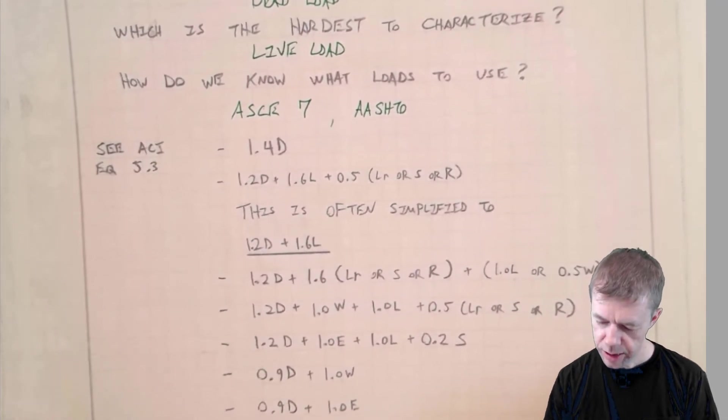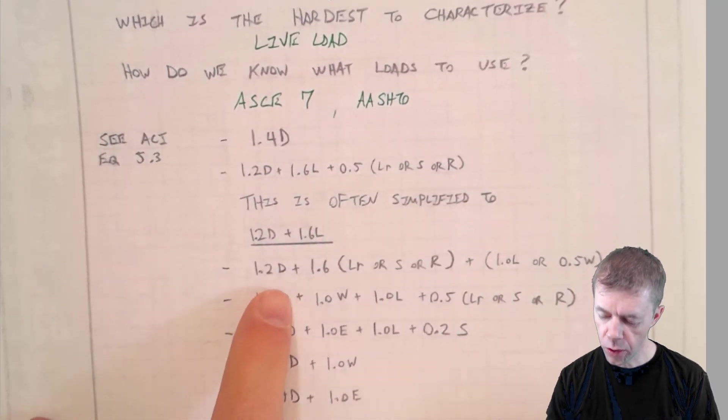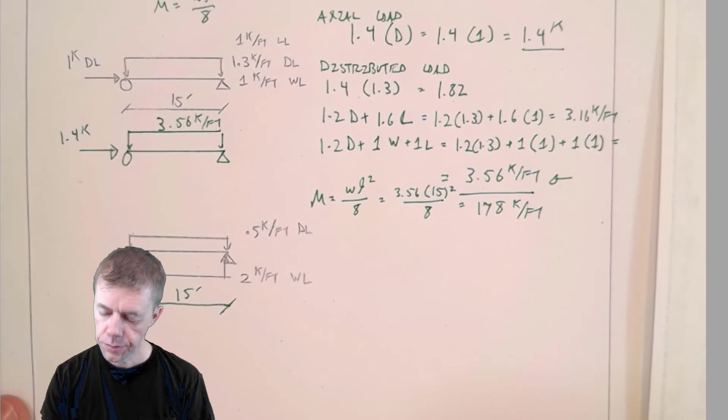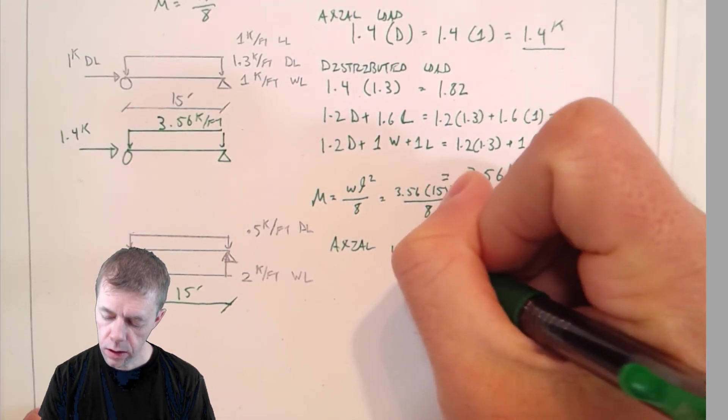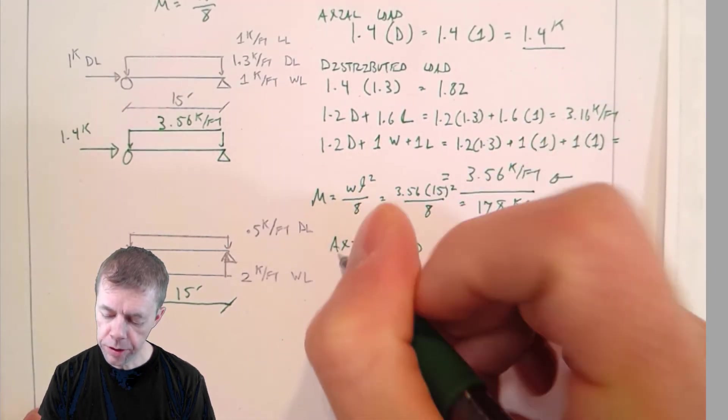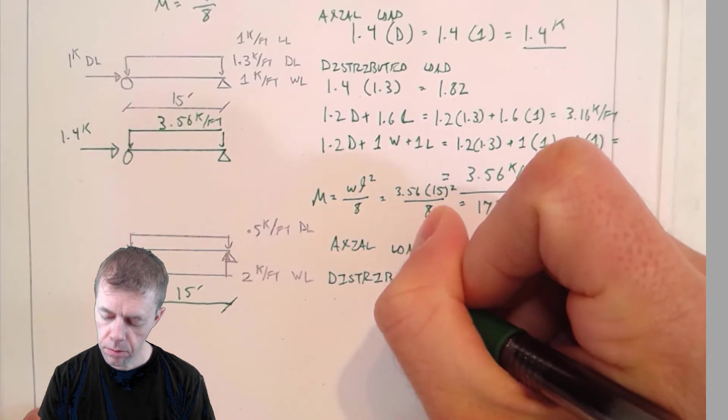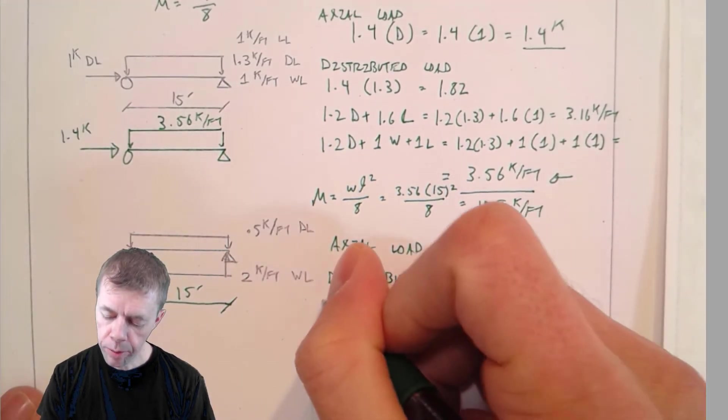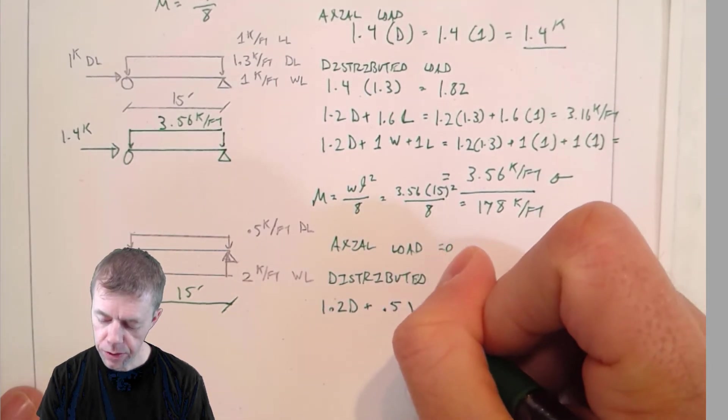The load factors are going to help us do this. I've got dead load and wind load. Let's go look at my structures here. Dead load, wind load. Here's dead load and wind load in this one. Let's try it. So the axial load is zero. How nice. And then let's talk about our moment from our distributed load.